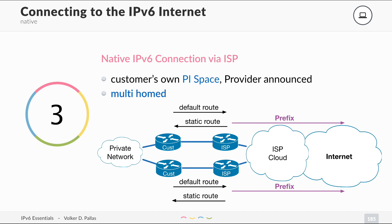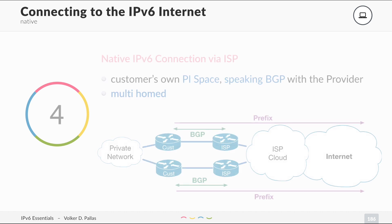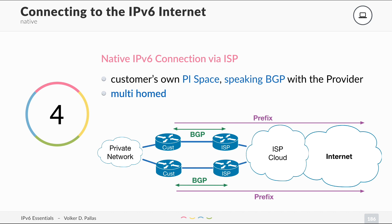The provider router then announces your prefix to the internet using BGP. In the advanced version, you run BGP between your routers and the ISP's routers, allowing you to announce your own PI space prefix to the ISP's router, which forwards it to the internet. You have your own prefix and can control whatever you do with it — switching paths from backup to primary anytime without needing to contact the ISP.